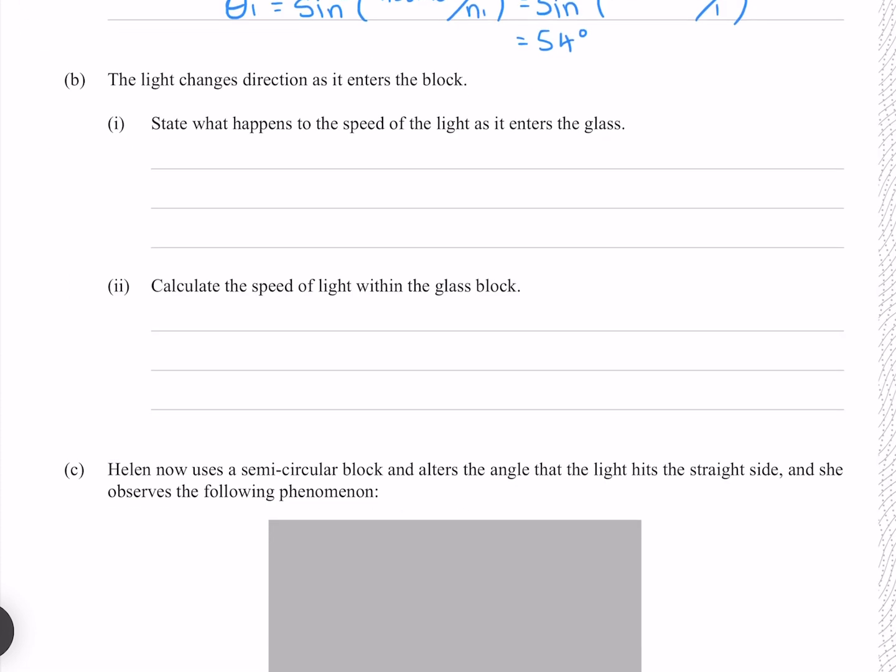The light changes direction as it enters the block. State what happens to the speed of the light as it enters the glass. Because the refractive index of glass is higher than air, the speed of light is going to decrease.